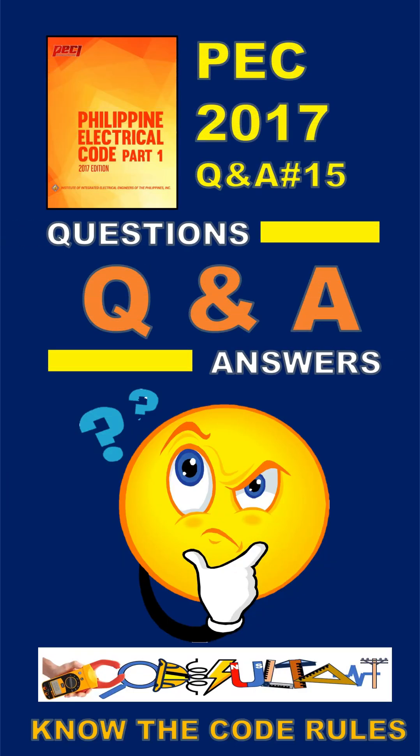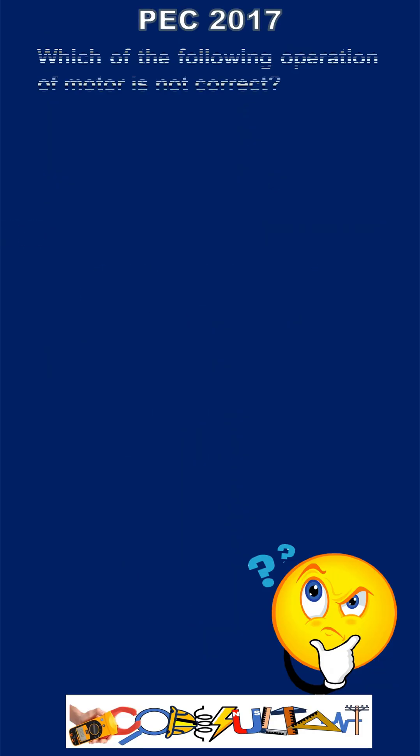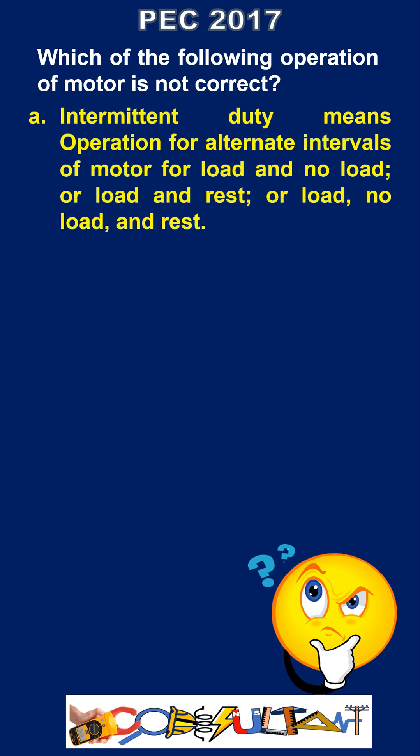PEC question and answer 15. Which of the following operations of a motor is not correct? A. Intermittent duty means operation for alternate intervals of motor for load and no load, or load and rest, or load, no load, and rest.